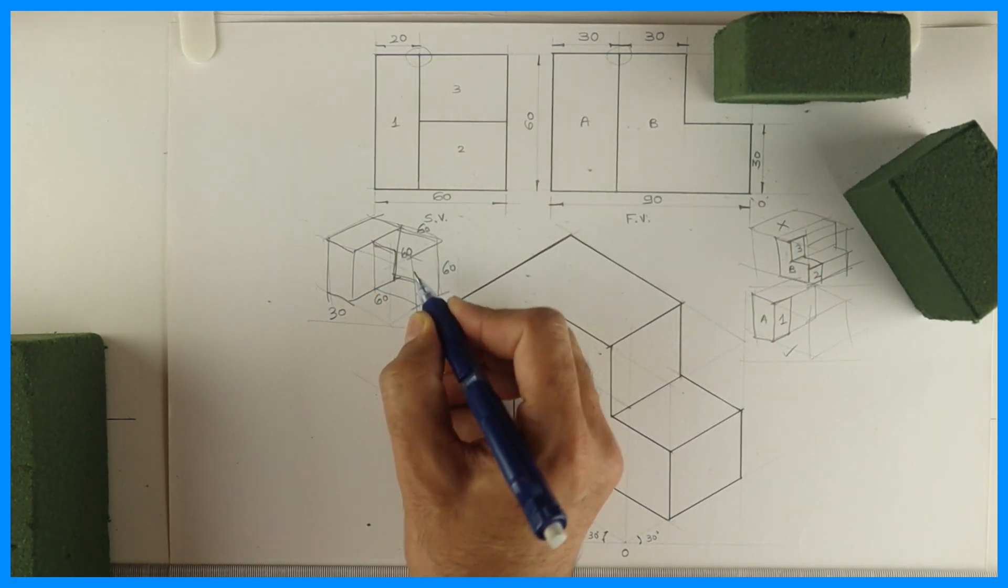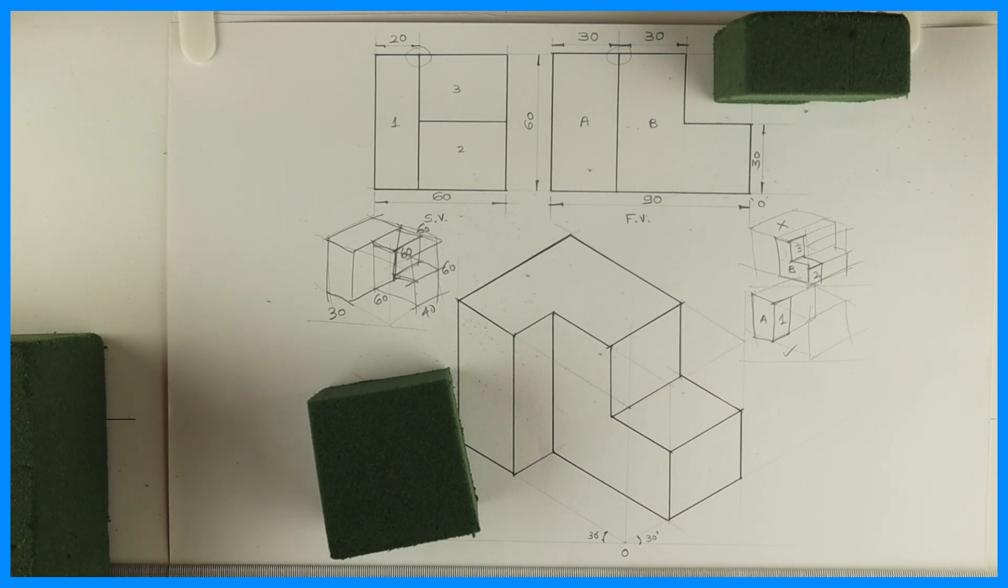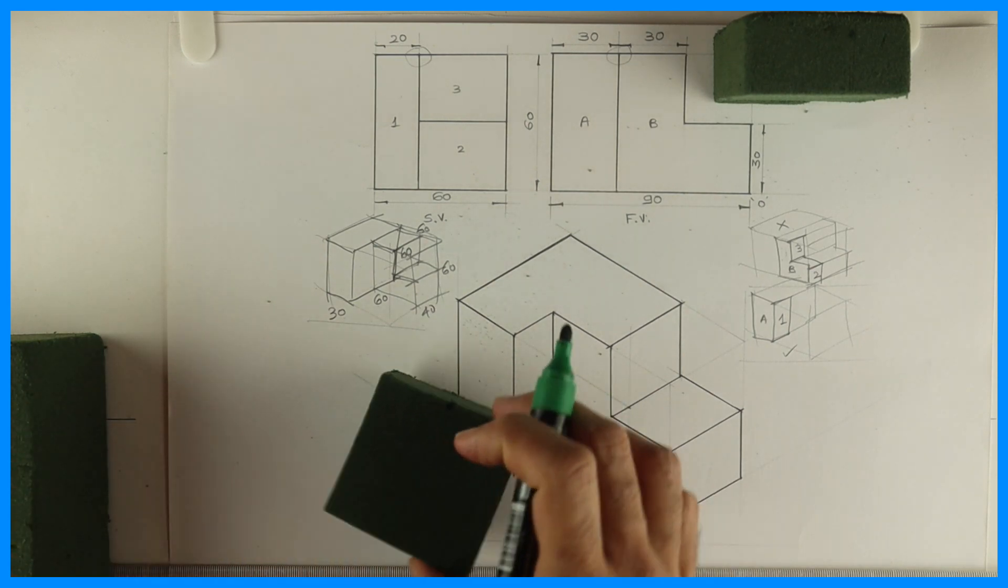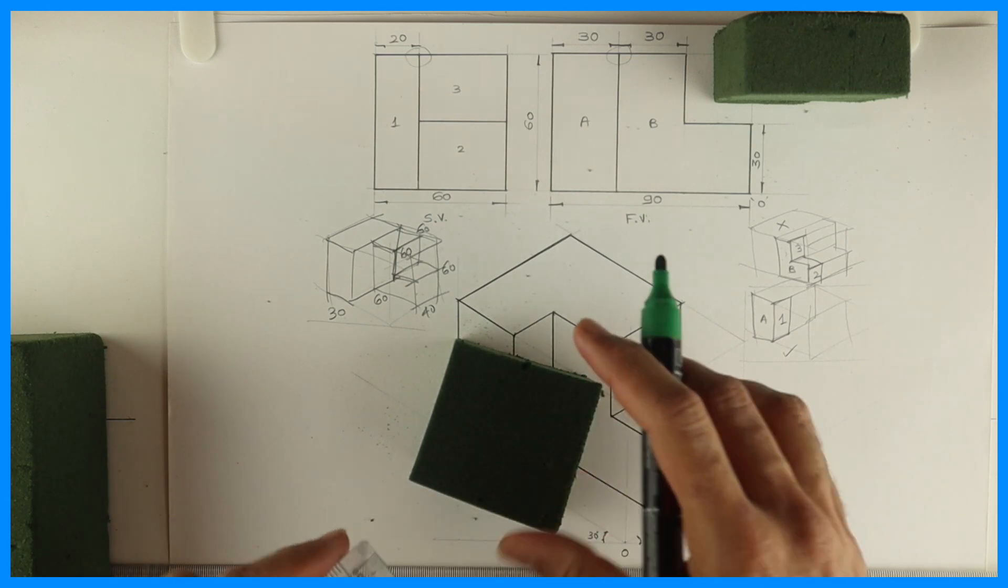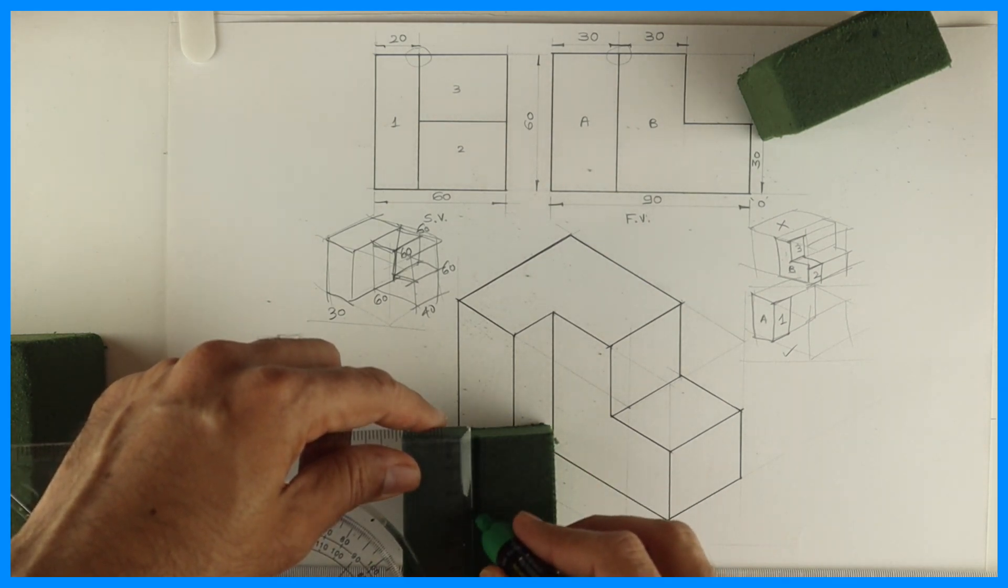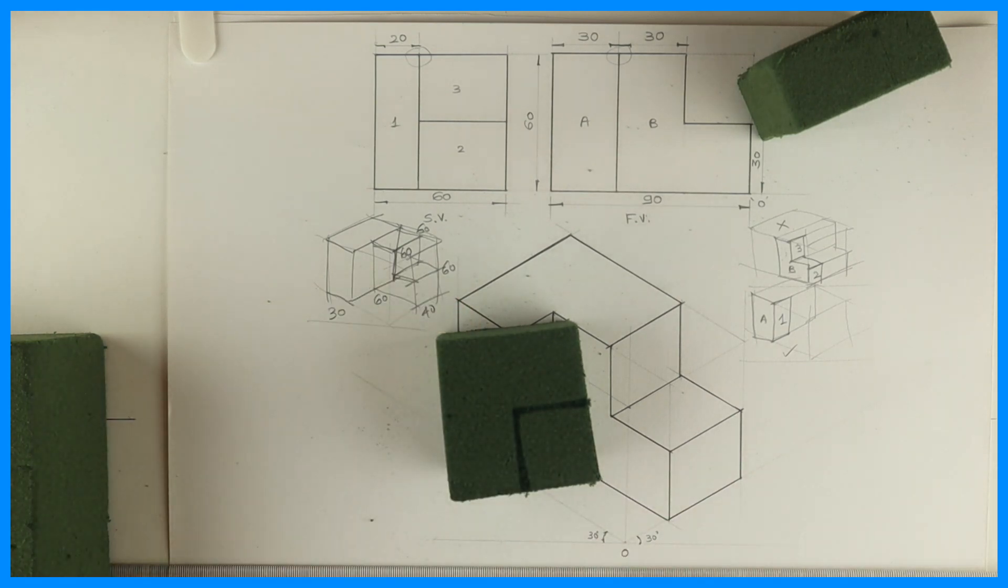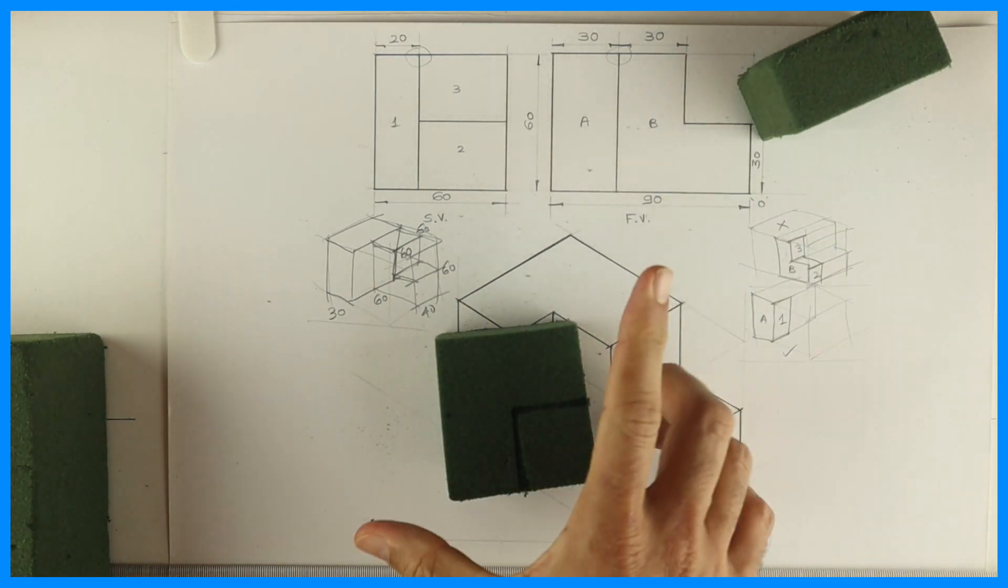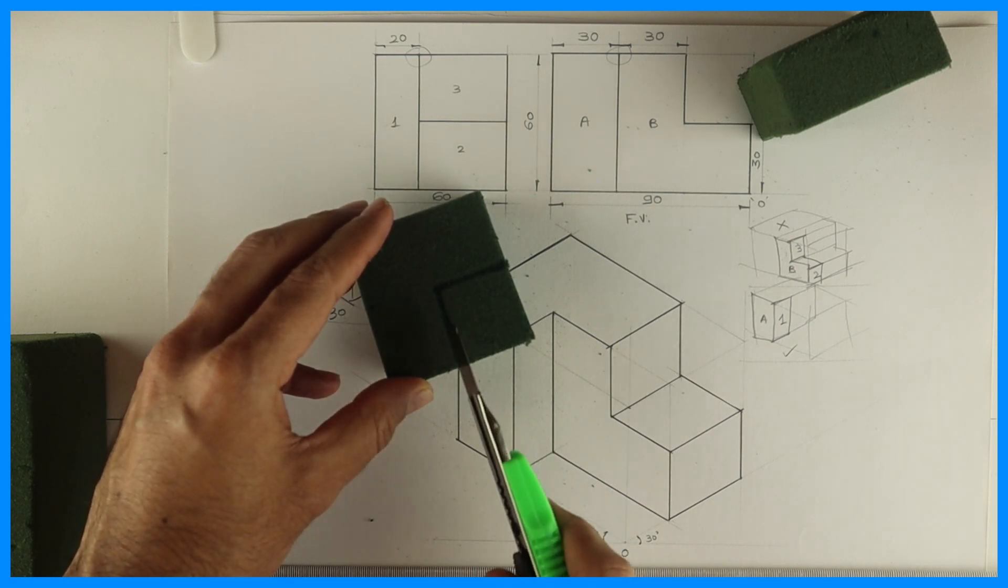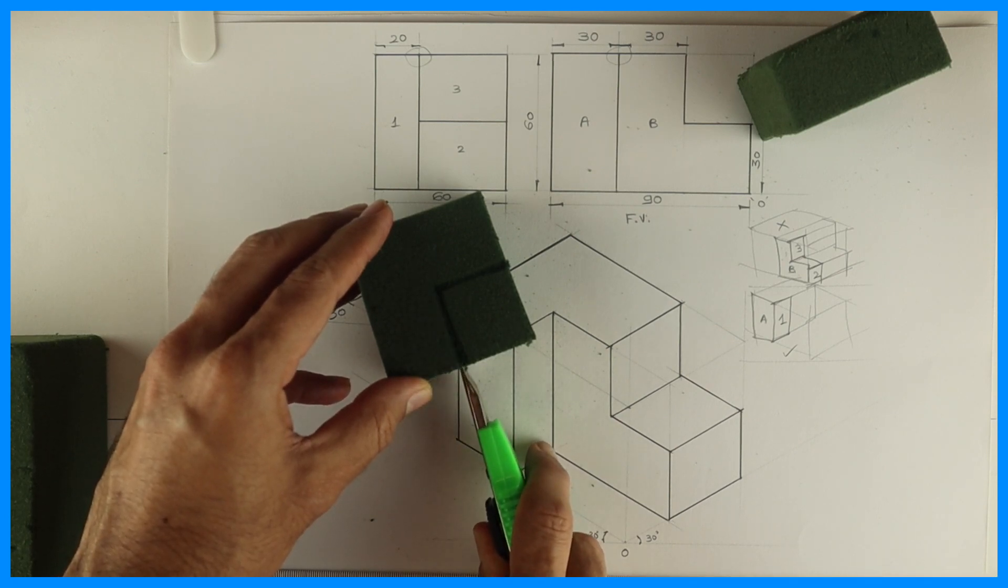So how much is that? 30. Go down by 30. This way, right? So that we will draw it on this box. See this. It will go down by 30. Now we need to cut. Now we will cut this object according to our marking and we will get the required L shape.